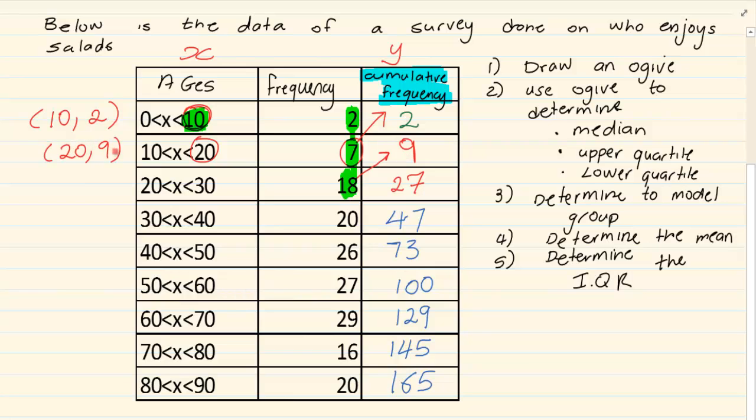The last part is your X and then your cumulative frequency is your Y. The next coordinate is 20 and 9. Continuing, I would have 30 and 27, then 40 and 47, 50 and 73, 60 and 100, 70 and 129, 80 and 145, 90 and 165.